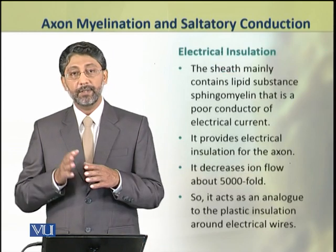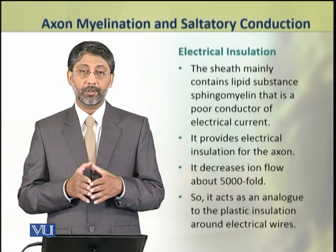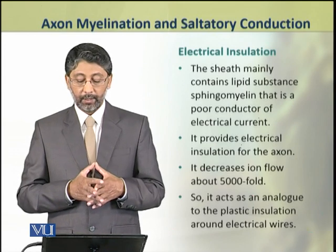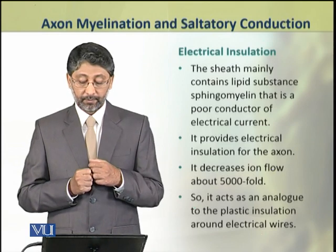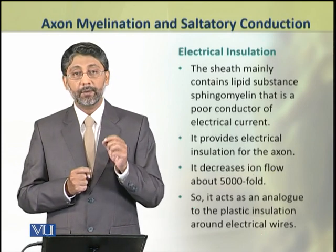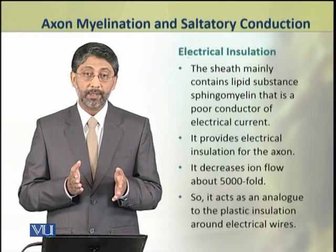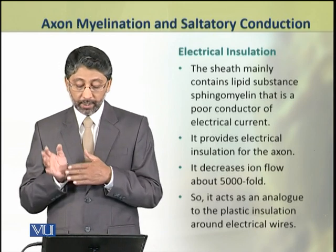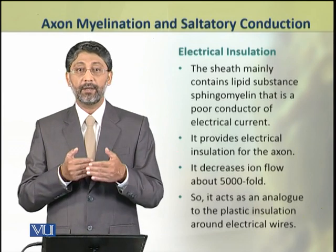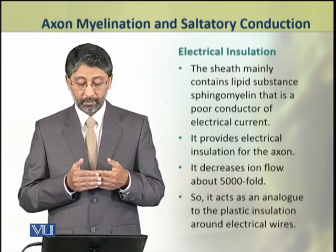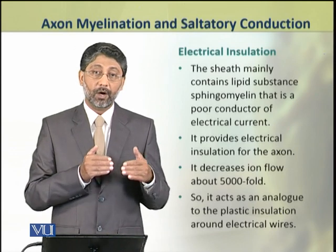We shall discuss these functions in detail. First, we shall discuss the electrical insulation provided by myelin sheath. As the sheath mainly contains the lipid substance sphingomyelin, which is actually a poor conductor of electric current, this substance provides electric insulation to the axon, just as electric wires are insulated around the copper wires. It decreases ion flow loss significantly.